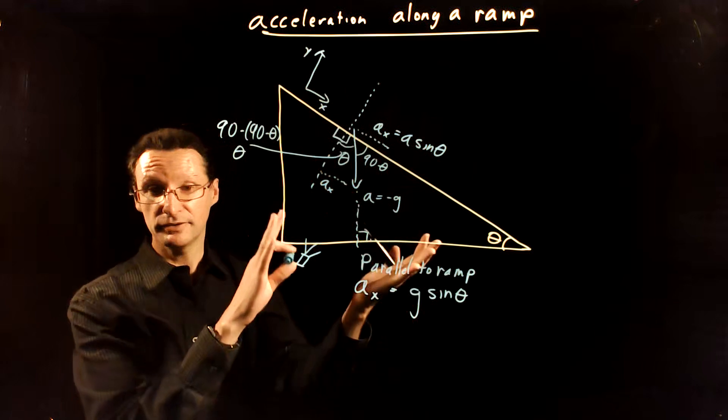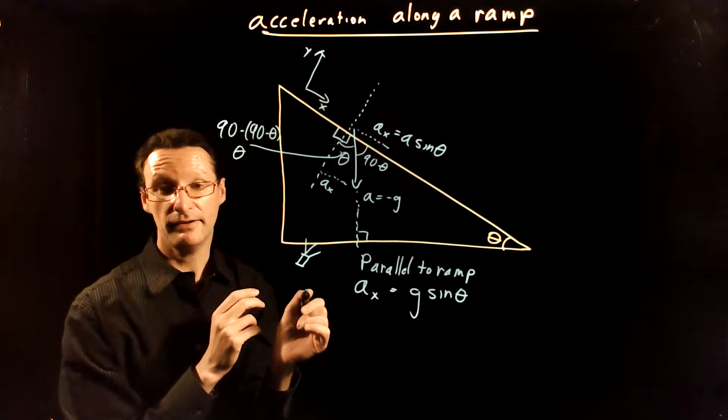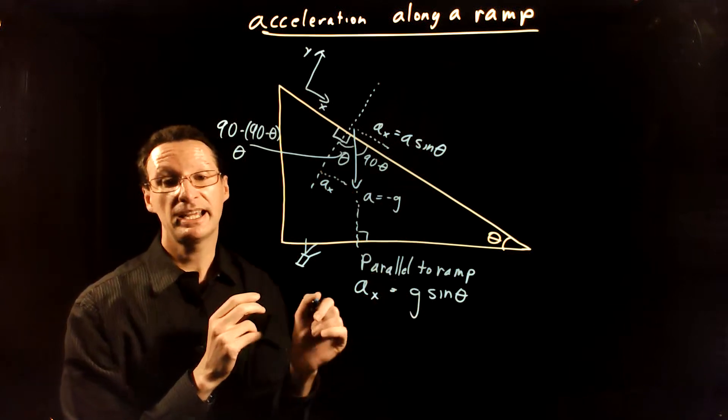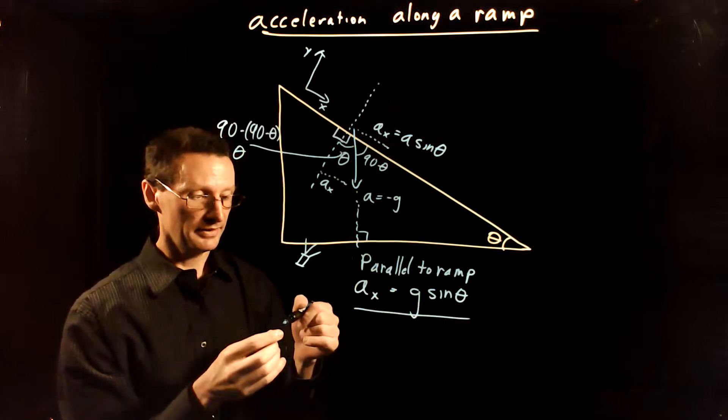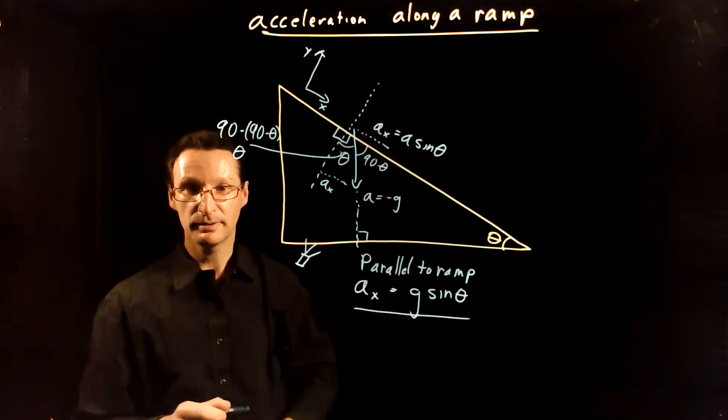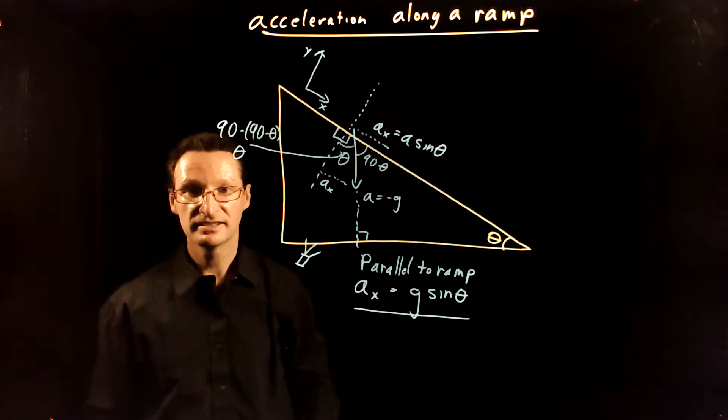So you may need—depending on how you do your coordinate system—you may need to have a negative in there by hand so it makes sense. Okay. So this is how you get acceleration down the ramp. It's a nice application of vector decomposition. All right. Bye.